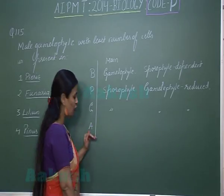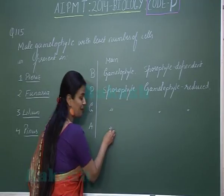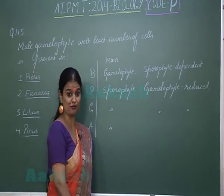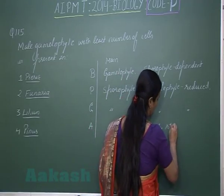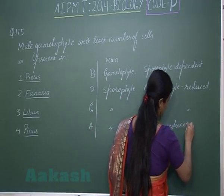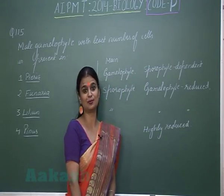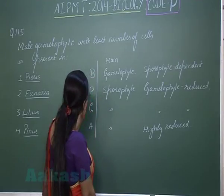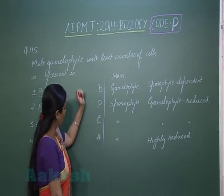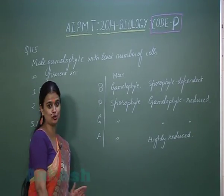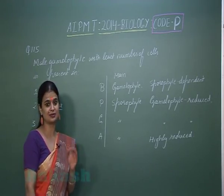Coming to the highly evolved plants — the angiosperms — the main plant body is also the sporophyte, and the gametophyte is highly reduced, represented by only a few cells. As we move from lower plants toward higher plants, from bryophytes toward angiosperms, there is progressive reduction in the number of cells present in the gametophyte.